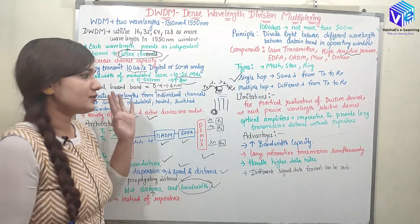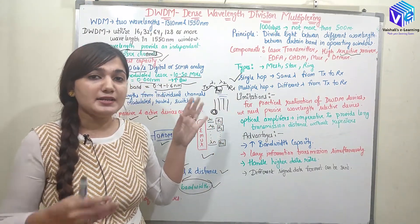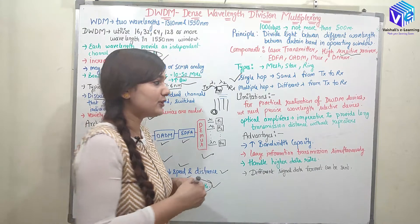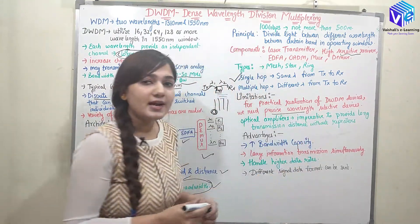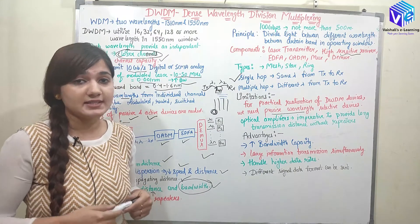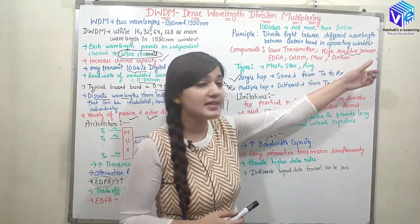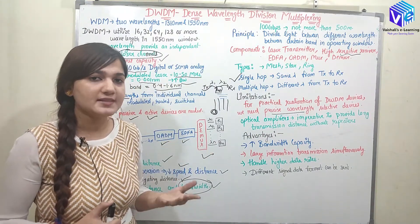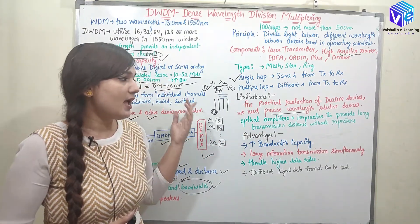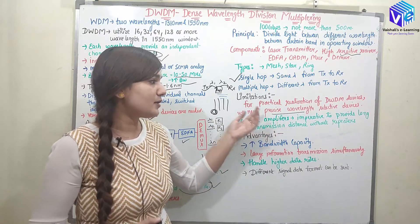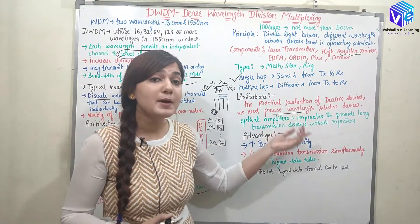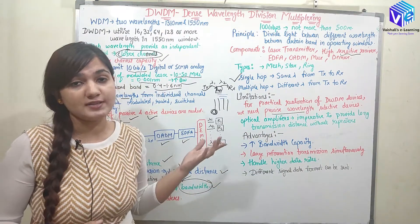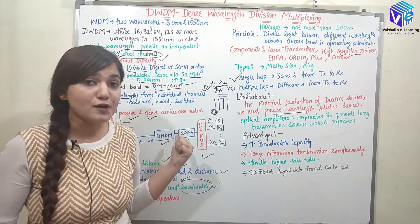The limitations are: for practical realization, I need channels that are really close and devices able to detect precise wavelengths. I require precise wavelength-selective devices, and a highly sensitive receiver, which becomes costly. Also, optical amplifiers are imperative to provide long transmission distance. Repeaters would be needed for very long distances, but since EDFA is used instead, it is not suited for very long distance communication.